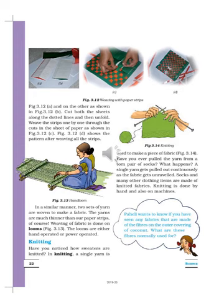The next method for making fabric is knitting. You can see on the screen that knitting — your mother or sister might be doing this during winter season when we all wear woolen clothes, and most of them are prepared at home itself. The knitting work is done with a single yarn; a single yarn is used for making a piece of fabric.